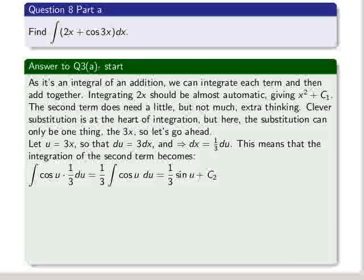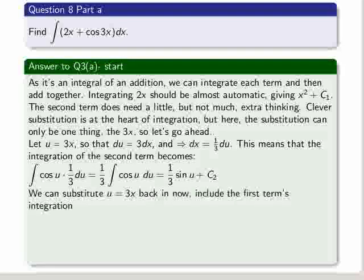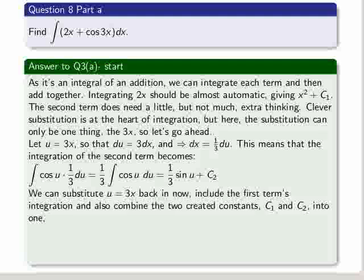So we get a third sine u plus a constant, which we call c2. We can substitute u equal 3x back in now. Include the first term's integration, that was the first term was 2x, integrated with x squared. And also combine the two created constants, c1 and c2, into one, which is called c.